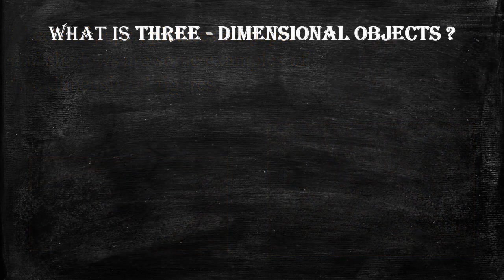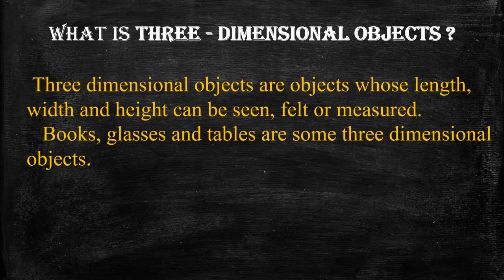Now we will see what 3-Dimensional Objects are. 3-Dimensional Objects are objects whose length, width and height can be seen, felt or measured. Objects whose length, width and height we can see, feel, or measure — those we call 3-Dimensional Objects.